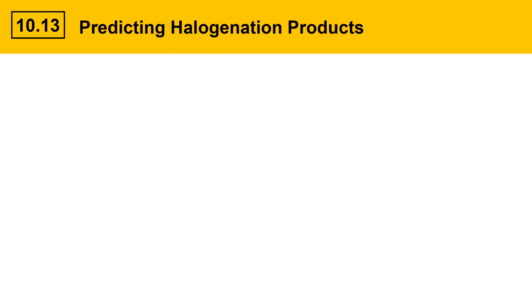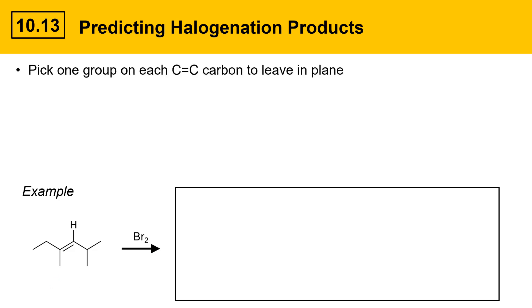This next slide is going to concentrate on predicting halogenation products. Here's an example where we'll outline a step-by-step procedure to help you get the products. We'll start with this alkene and bromine. The first thing you should do is pick one group on each C=C double bond carbon to leave in the plane. I'm going to highlight this species with some yellow highlight to indicate that these are the carbons that I'm going to keep in the plane of the screen. And I'll just draw those where these are the carbons that are shown in the highlight over on the left.